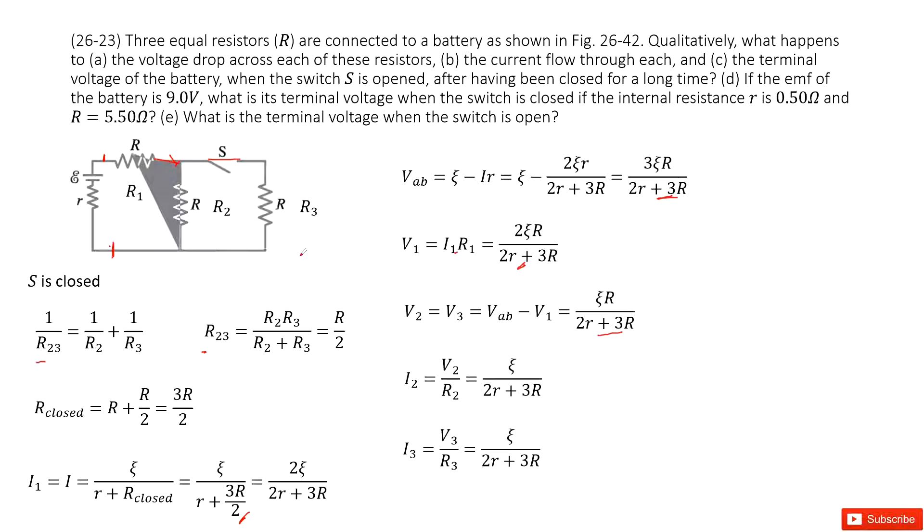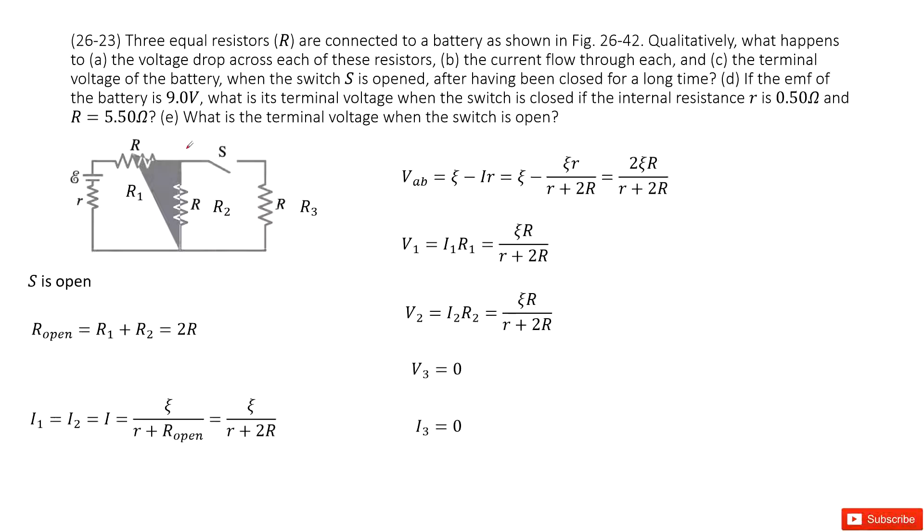The second situation, S is open. So for S is open, these branches, so R3, the current goes through equal to 0. And the voltage goes through equal to 0. The circuit only has the battery and R1 and R2. Now we can see the equivalent resistance for the open situation, R open is R1 plus R2 equal to 2R. And then we can get the current goes through the circuit. That is the current I equal to I1 equal to I2 equal to the epsilon divided by internal resistance plus external resistance, epsilon divided by R plus 2R.